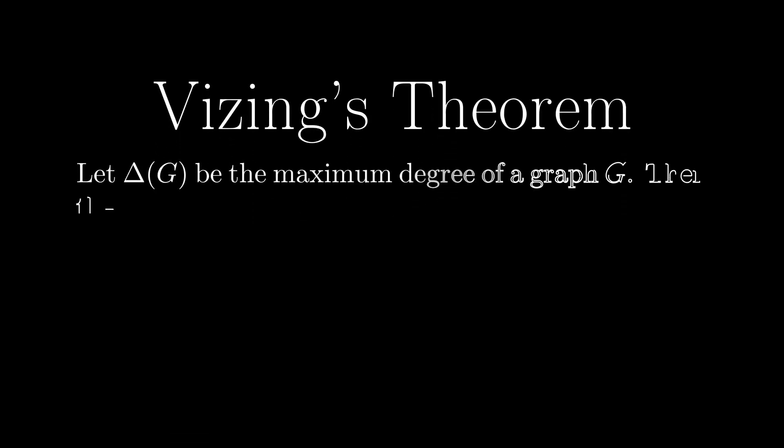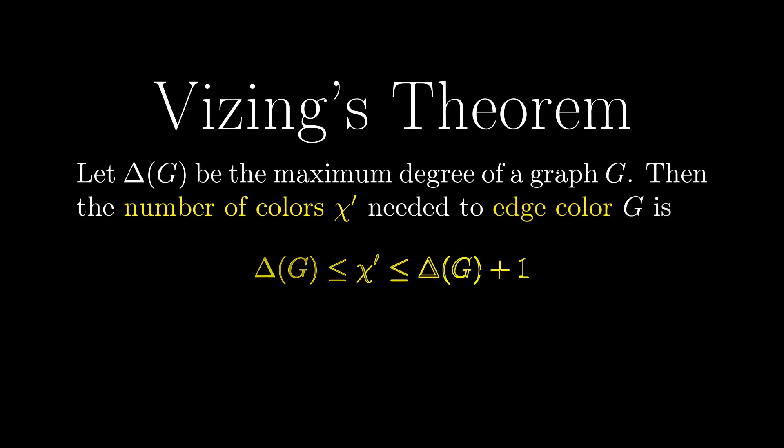The theorem states that the number of colors χ' needed to edge color a graph is between the maximum degree of the graph Δ(G) and the maximum degree of the graph plus 1.